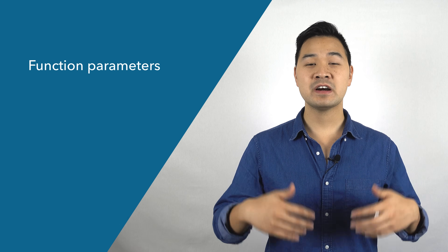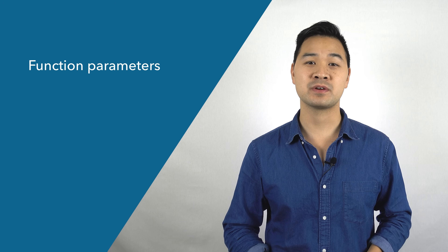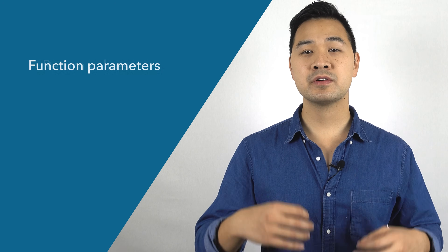Today you learned about how you can organize your code into functions. You learned about function parameters where you can pass data into functions for them to work with. We also covered return values where functions can return data back to us. And finally, we covered variable scope where the variables and data inside of a function only exist within the scope of that function. There's still more to functions you can learn, but what we've covered is more than sufficient for right now. I'll add links in the description to additional videos and the official Apple documentation for functions.